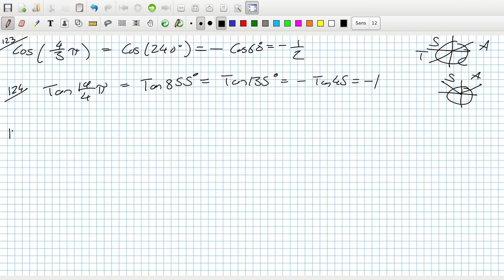The next one, 125. That's sin -3/4π, which is -sin, and then 3/4π in degrees is 135. And using the same logic as before, but it's a positive this time because it's in the S quadrant. So that would be sin of 45, which is √2/2. And I forgot to carry my minus over, minus here, minus there.